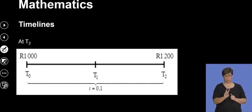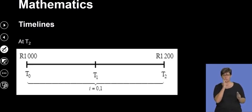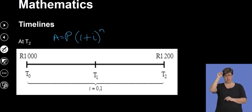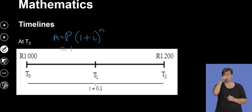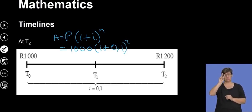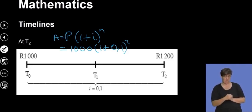At t2, if I want to calculate what happens to my R1 000 for two years, I use the compound interest formula for growth: A = P(1 + i)^n. My P is R1 000, the interest is ten percent which is 0.1, and n is two years. Remember, when moving forward you multiply by (1 + i) to the exponent of a positive n.